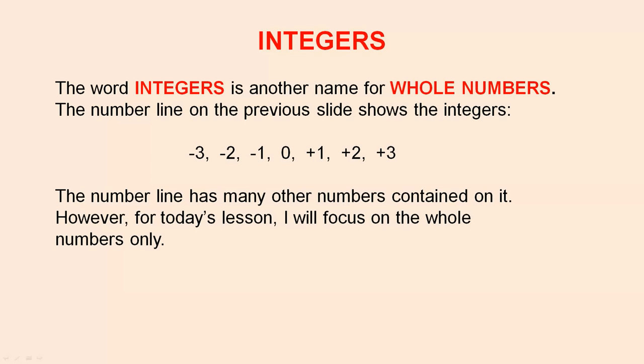Integers. The word integers is another name for whole numbers. The number line on the previous slide shows the integers negative three, negative two, negative one, zero, positive one, positive two and positive three.